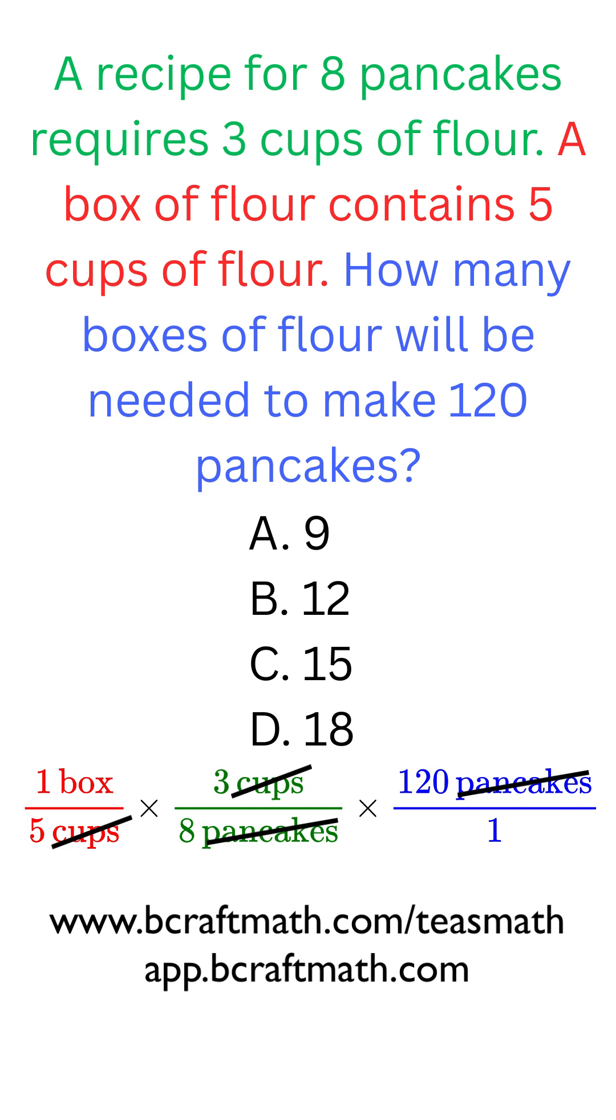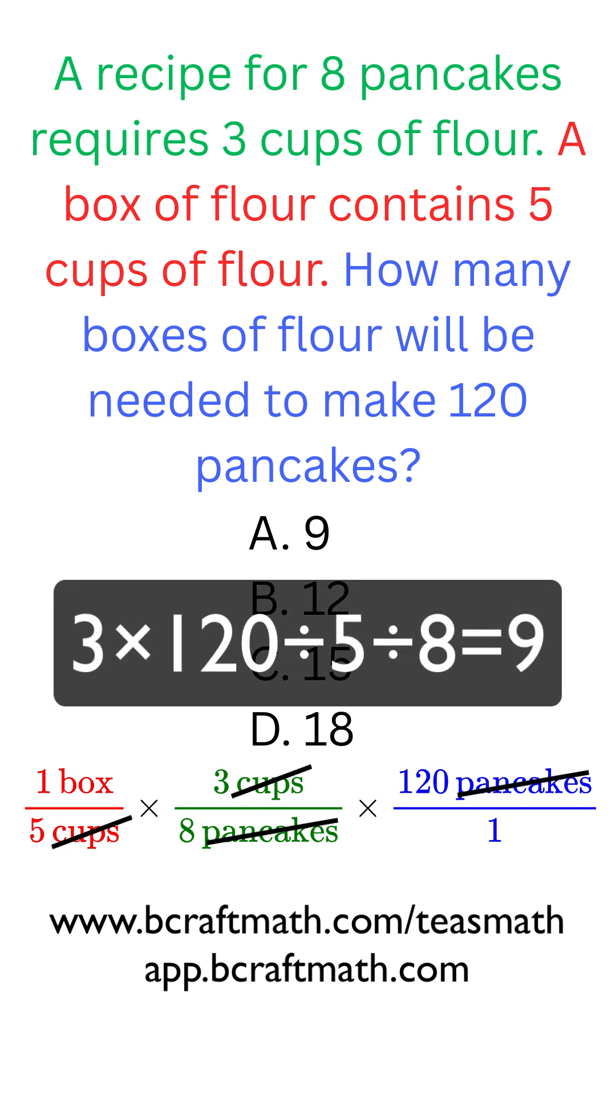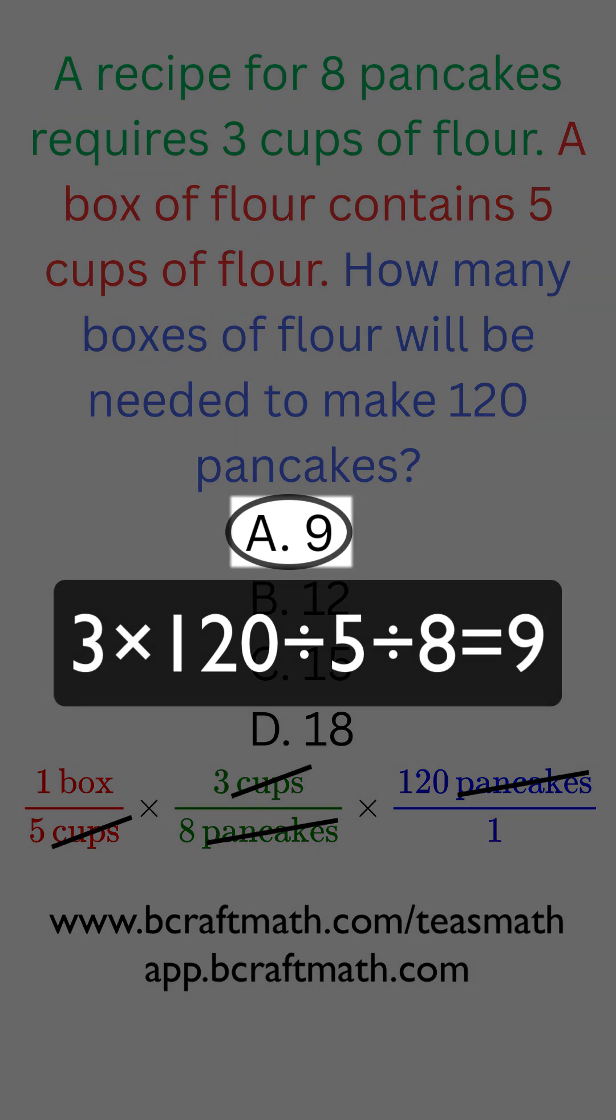The only word, the only thing that we have left is the word box. Let's multiply all of our top numbers and let's divide by all of our bottom numbers all at one time and we get an answer of nine boxes.